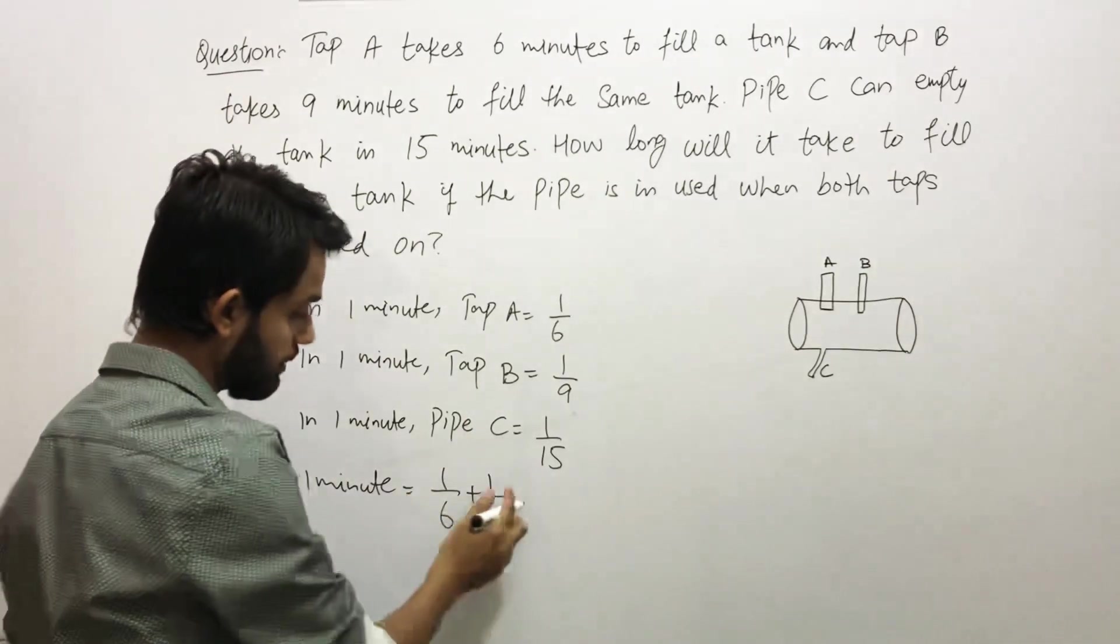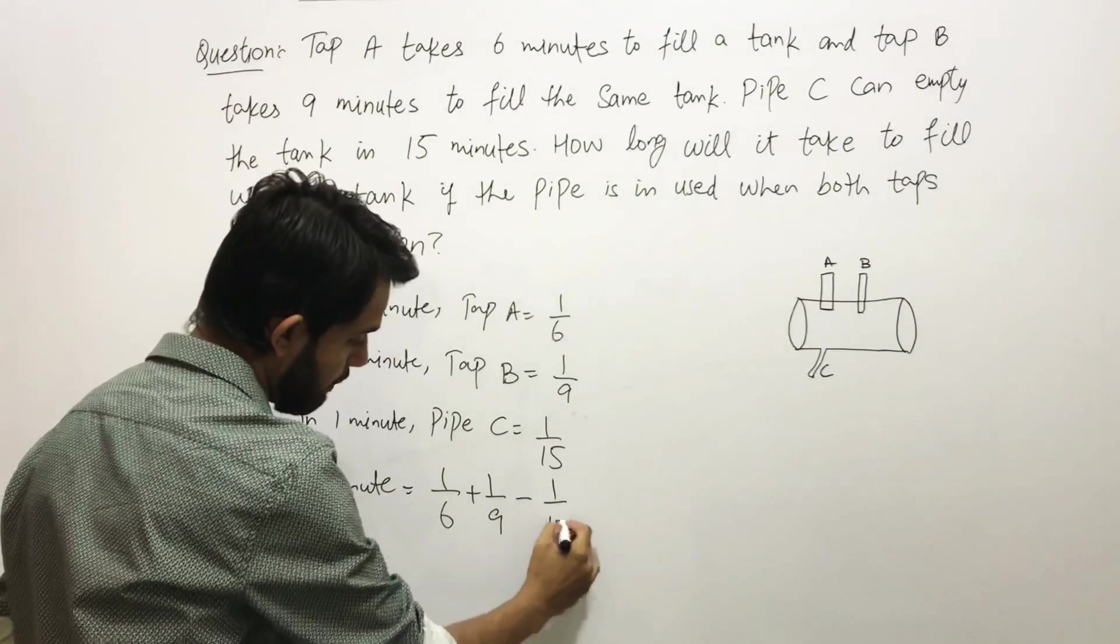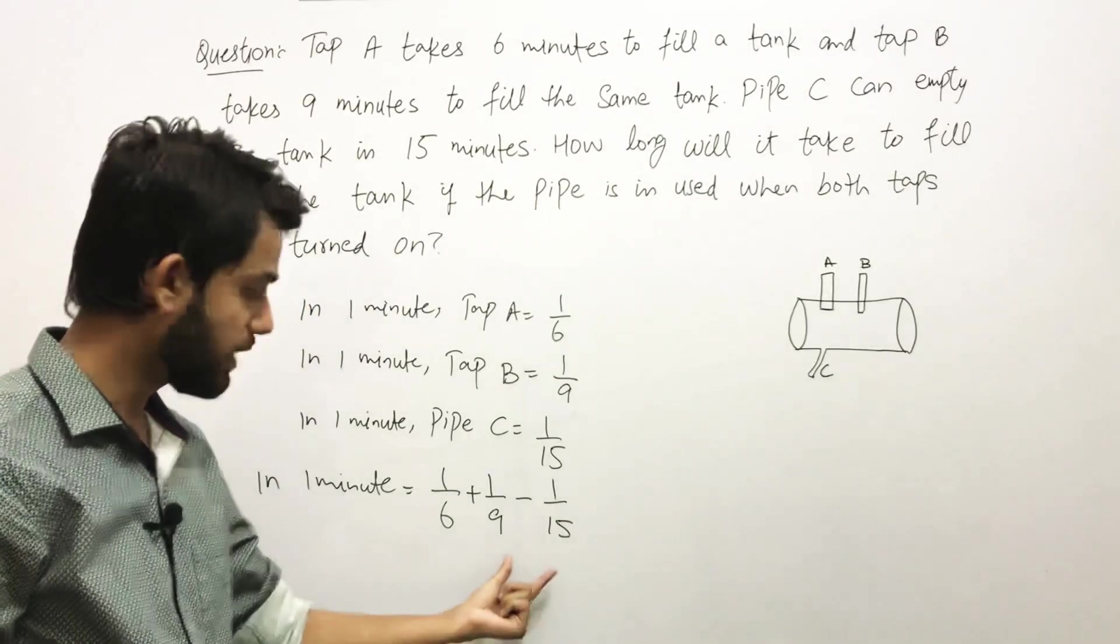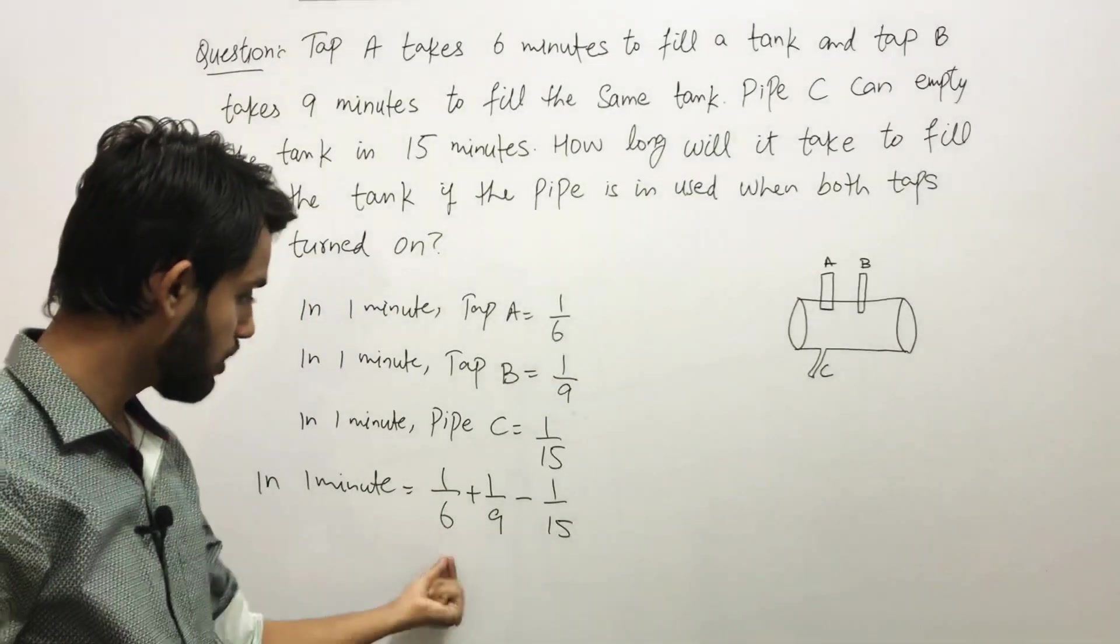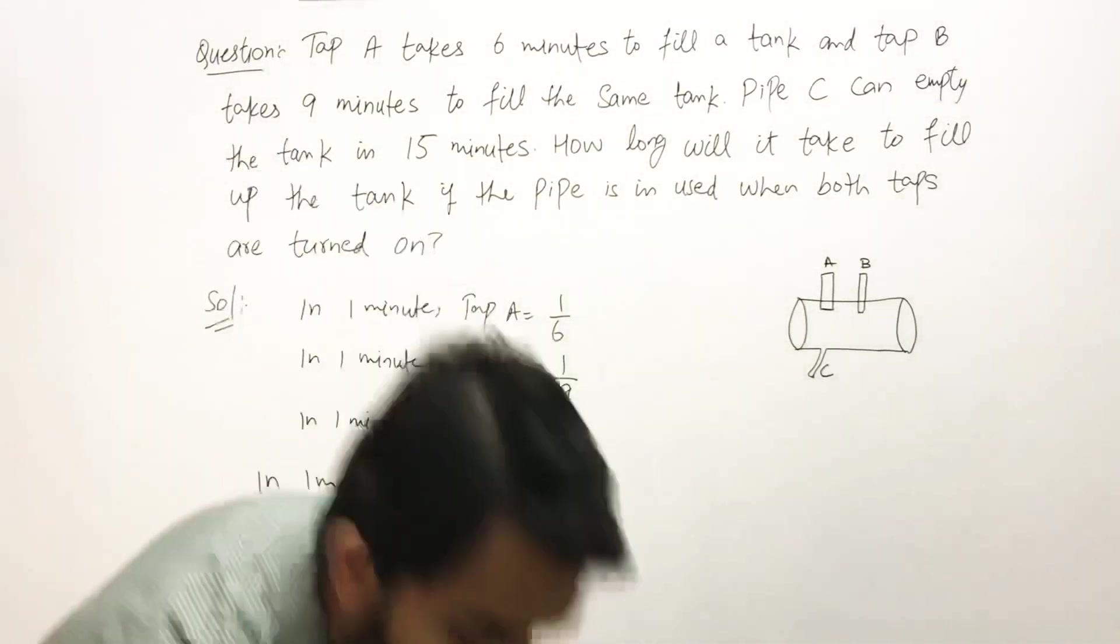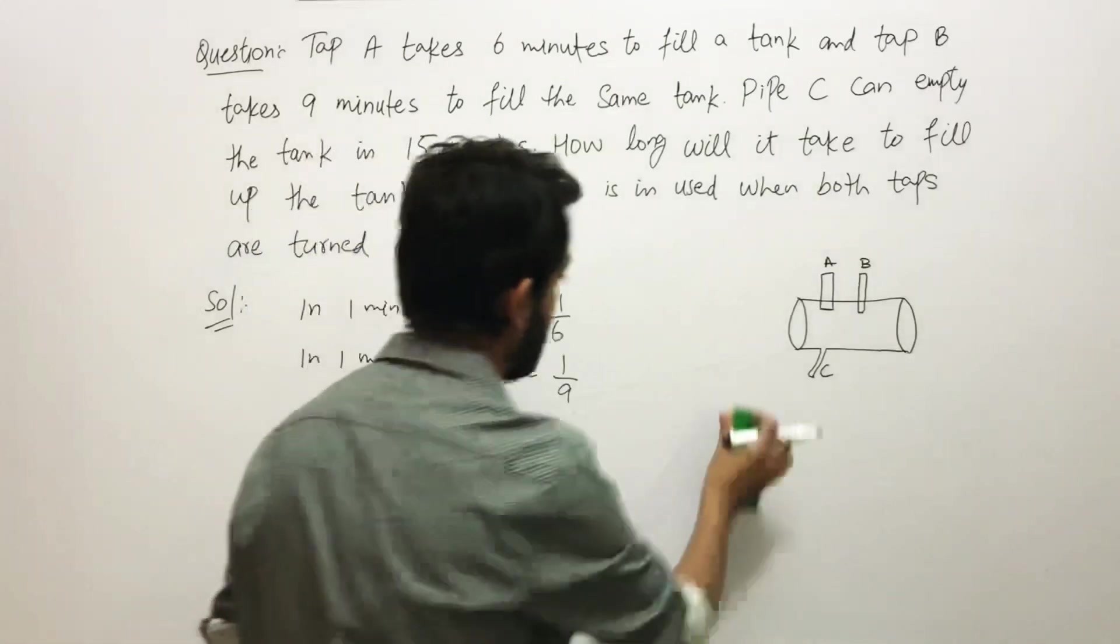In 1 minute, Tap A plus Tap B are filling this much portion of the tank, and Pipe C is basically emptying or draining 1/15 of the tank. We need to make the denominator the same in order to solve this expression, so I am going to remove my figure.